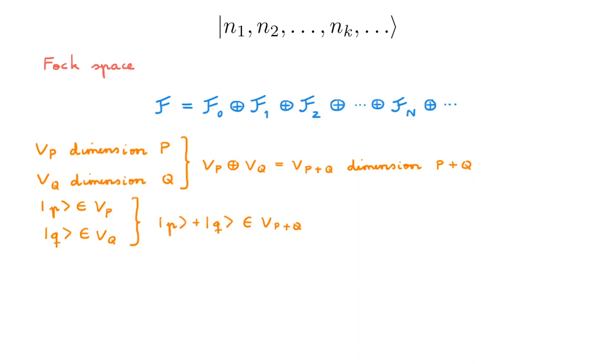So what does this mean for the Fock space? It is the space spanned by the occupation number states for all possible numbers of particles. As such, we can form a basis of the Fock space by combining the basis of all individual Fn spaces.